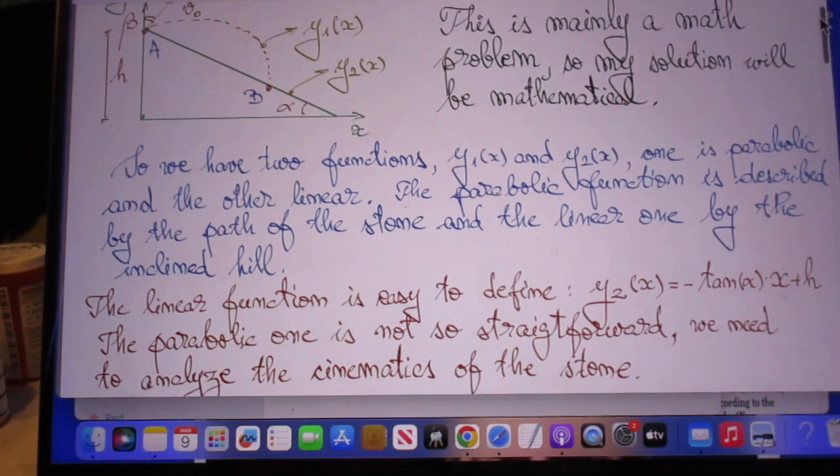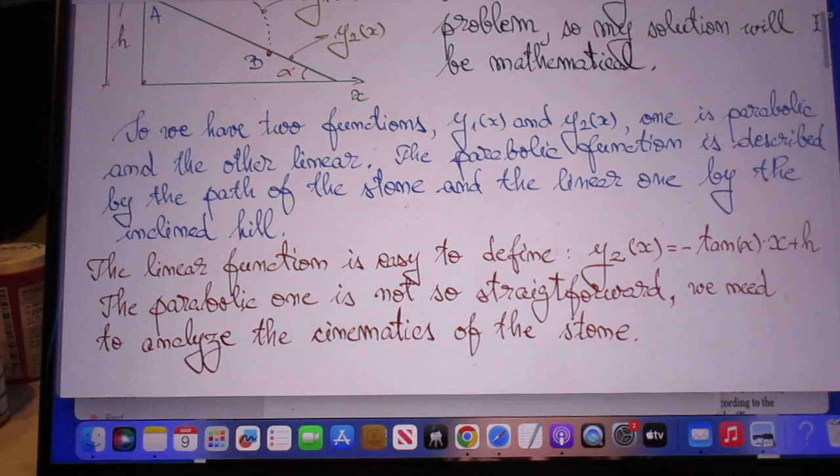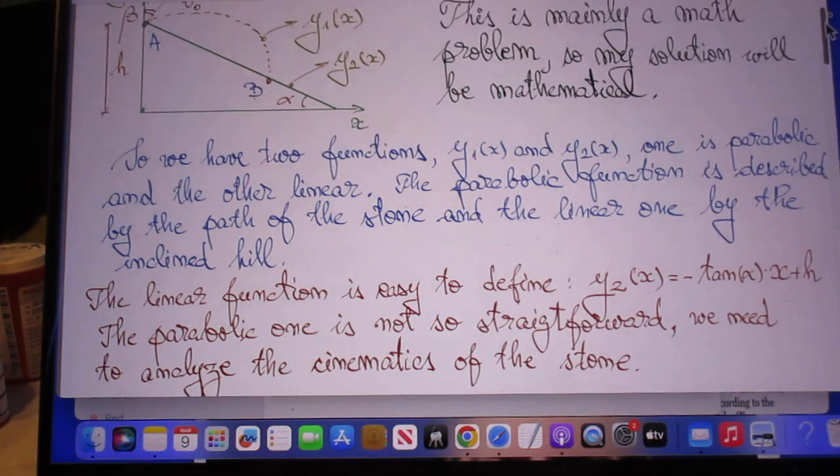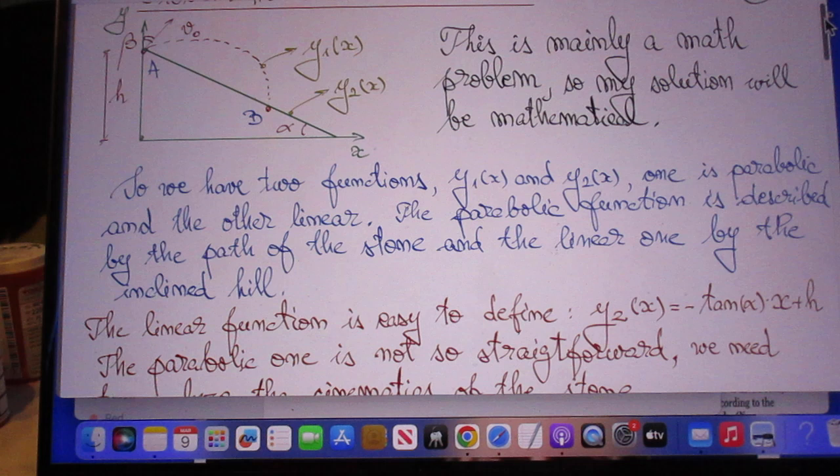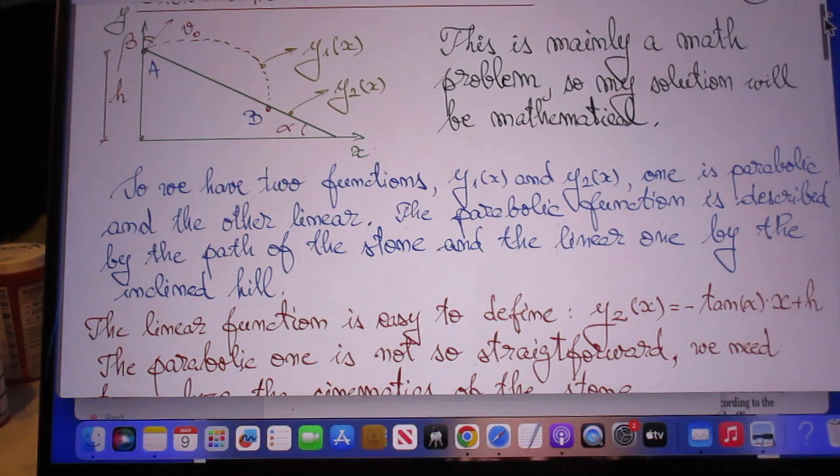So let's read together Organ's solution. We have two functions, y_1(x) and y_2(x). One is parabolic and the other is linear. The parabolic function is described by the path of the stone and the linear one by the inclined hill.